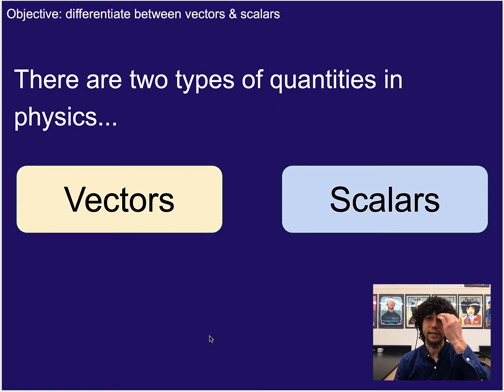Alright, so there are two types of quantities in physics that we'll talk about, namely vectors and scalars. Now there are other categories we could describe measurements or quantities in, but this is one of the main set of categories.